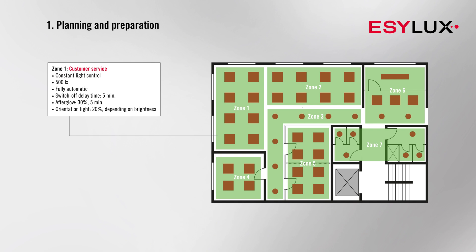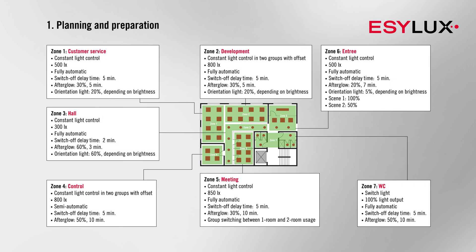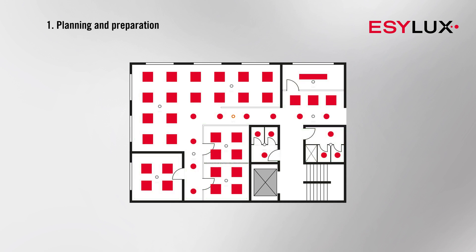The requirements for Zone 1, customer service, are different to those for Zone 5, the meeting room. Each area has its own particular requirements that the customer wants to take into account. No problem with EZ-LOOKS. The first thing to do is select the locations for your detectors. A single APC presence detector is sufficient to control the entire area. You then divide up the operating devices into groups according to the requirements.